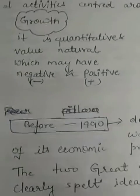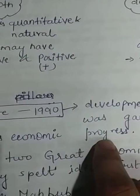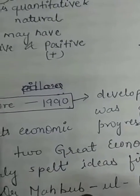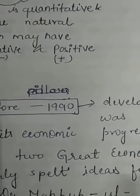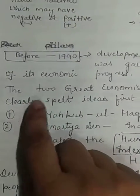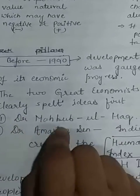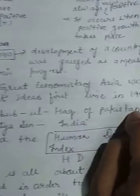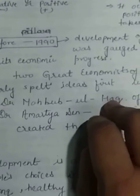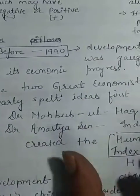You cannot say a country is developed only on the basis of economic progress. The quality of life of the people, the opportunities they have, and the freedom they enjoy are important aspects of development. These ideas were clearly articulated by two great economists of Asia: Dr. Mahbub ul-Haq from Pakistan and Dr. Amartya Sen from India.